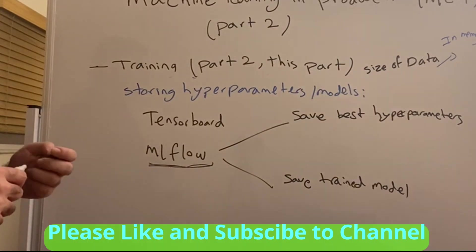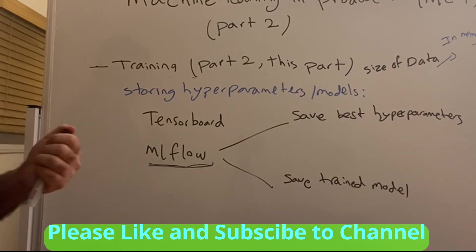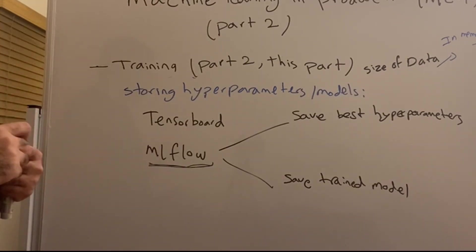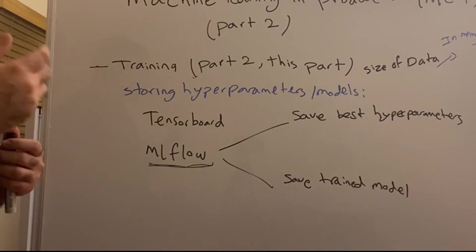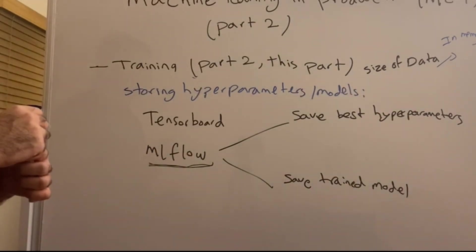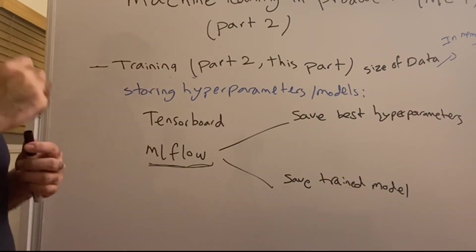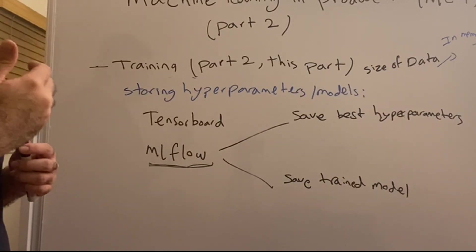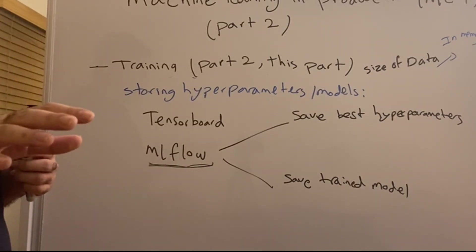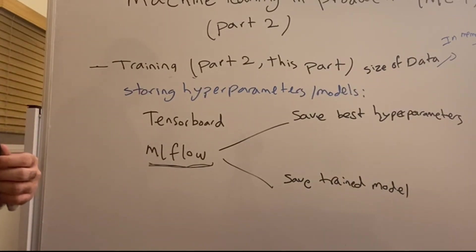The next important topic is infrastructure, which I'll cover in the next video — what infrastructure to use for training, testing, or prediction. We're going to talk about Google Colab, SageMaker, EMR, Databricks, and the pros and cons of each. That's it for this video. I covered several very important topics — leave a comment letting me know which part you need more detail on, and I'll do my best to post more videos answering your questions. Thanks, and I'll see you in the next video.